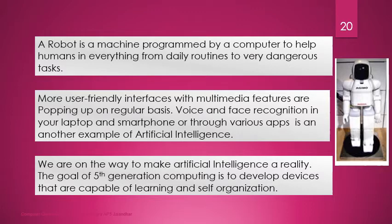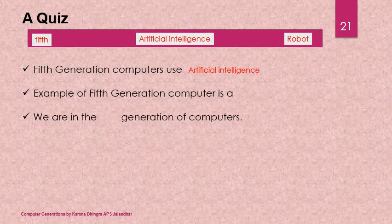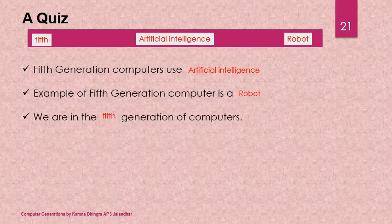We are on the way to making artificial intelligence a reality. The goal of fifth generation computers is to develop devices capable of learning and self-organization. Quiz recap: Fifth generation computers make use of artificial intelligence, robots are an example, and we are currently in the fifth generation — looking forward to more advanced and self-organized techniques.